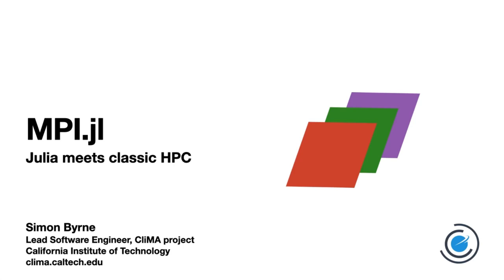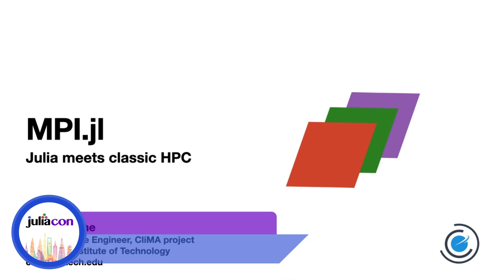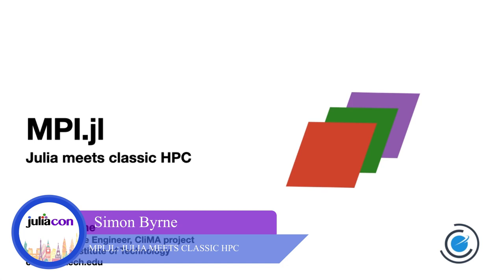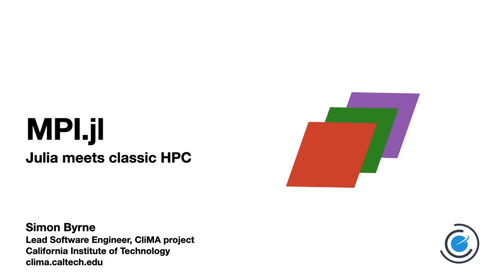Hello and thank you for joining me. My name is Simon Byrne. I'm the lead software engineer on the Klima project, where we're building a next generation climate model in Julia. If you'd like to hear more about that, please see my JuliaCon talk from last year or visit our website. Today I'll be speaking about MPI.jl, a package for parallel programming in Julia.